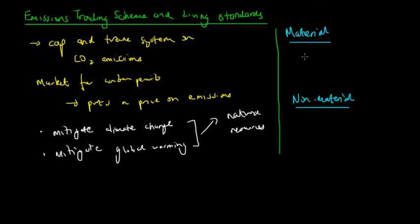Now material living standards refers to our purchasing power or relates to our purchasing power of goods and services. Now the more goods and services we can consume, we are said to have a greater material living standard.